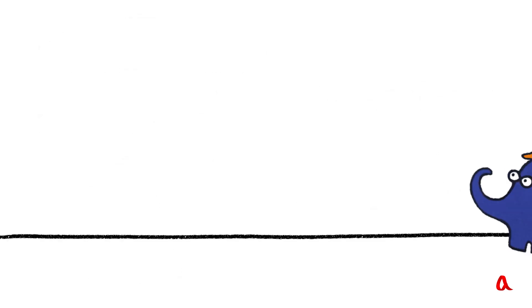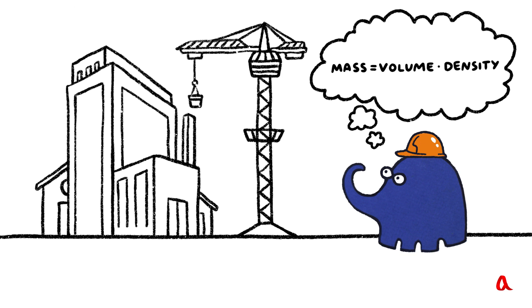An engineer designing a construction knows its measurements and can calculate the volume of every piece. He looks up the density of the substance the piece is made of, multiplies it by volume and finds out the mass.